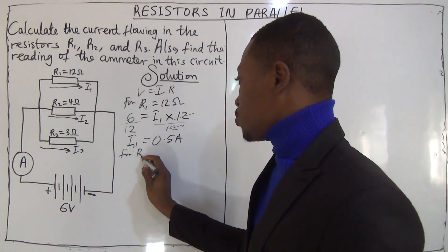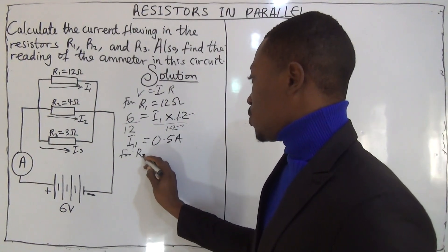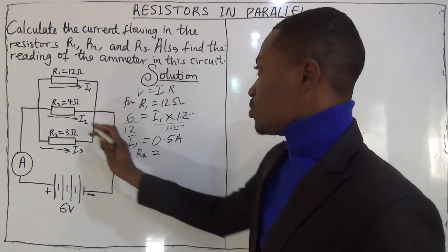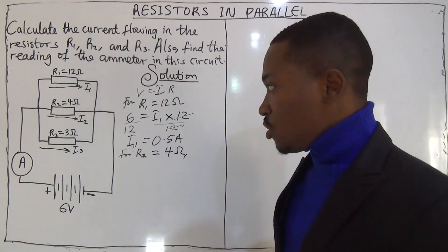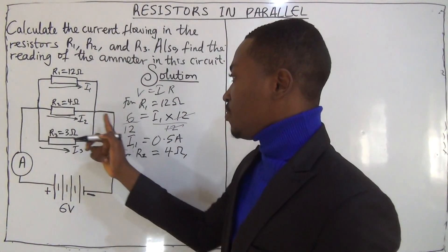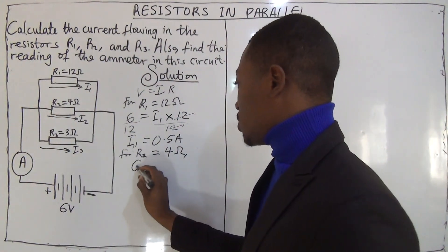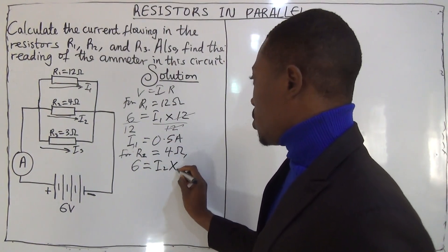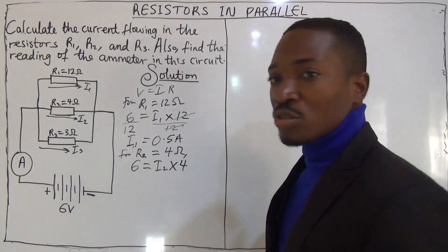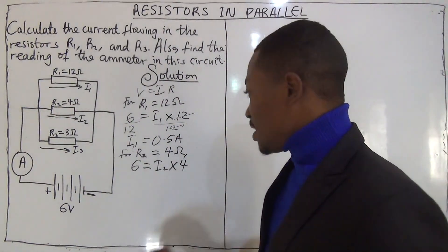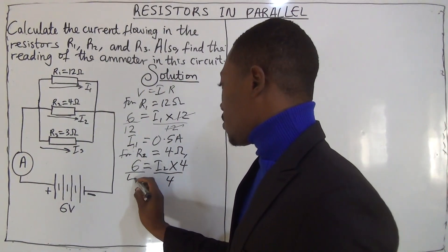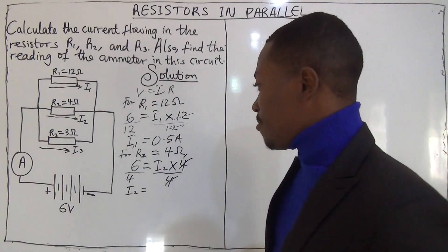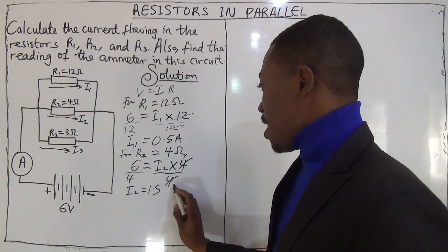We do the same thing for R2. The value of R2 is 4 ohms. Using the same voltage of 6 volts across R2, we write 6 equals I2 multiplied by 4. We find I2 by dividing both sides by 4, giving us I2 equals 6 divided by 4, which is 1.5 amperes.